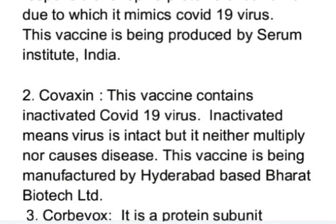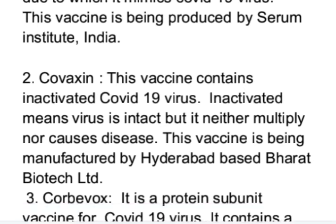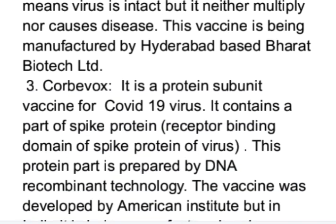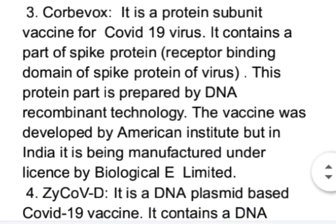Next is Covaxin — this vaccine contains inactivated COVID-19 virus. Inactivated means the virus is intact but it neither multiplies nor causes disease. This vaccine is being manufactured by Hyderabad-based Bharat Biotech Limited. Next is Corbevax — this is a protein subunit vaccine for COVID-19 virus. It contains a part of the spike protein, and this protein part is prepared by DNA recombinant technology.